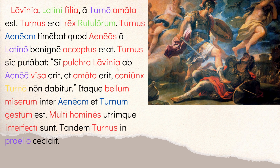Because they're fighting over Lavinia: 'Itaque bellum miserum inter Aeneam et Turnum gestum est' — a miserable war was fought between Aeneas and Turnus. Gestum est is perfect passive, neuter because it refers to bellum. 'Multi homines utrimque interfecti sunt' — many men on both sides were killed, perfect passive plural. 'Tandem Turnus in proelio cecidit' — finally Turnus fell in battle, which is the image you're seeing to the right.